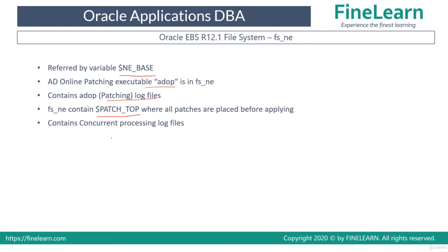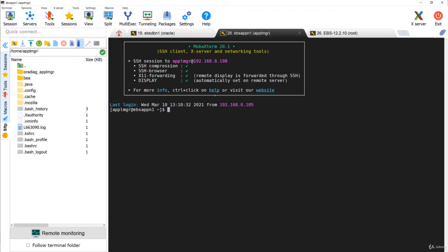Most importantly, fs_ne also contains the concurrent processing related log files. Concurrent processing is the facility or feature used in Oracle E-Business Suite for ad-hoc reporting. Whenever users are supposed to run any reports, concurrent processing facilitates running these reports in the background, and the log files related to concurrent processing are very important — all of these are also located in the Non-Edition File System, that is fs_ne.